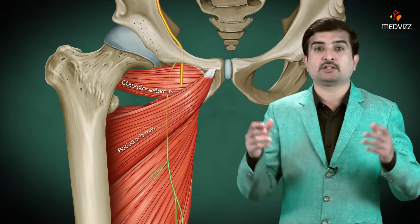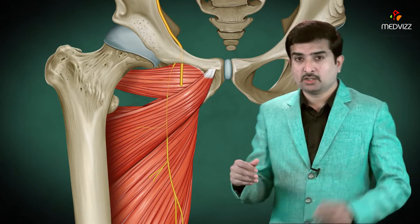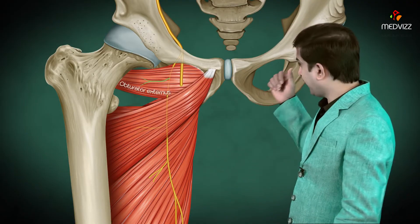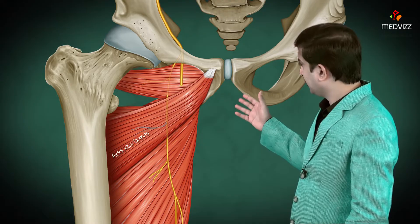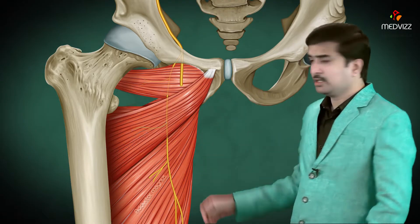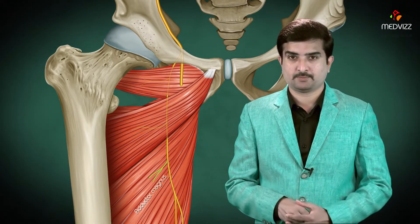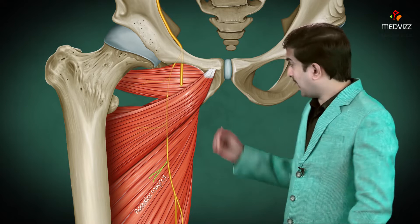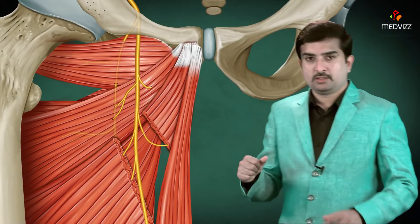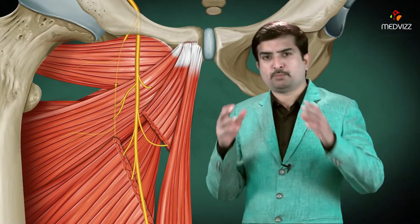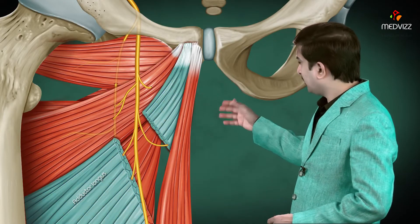The posterior branch innervates the obturator externus, part of the adductor brevis, and the superior fibers of the adductor magnus. The anterior branch runs between the adductor longus and adductor brevis muscles.